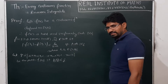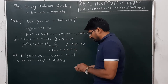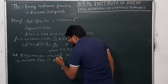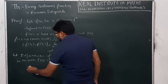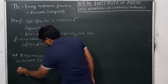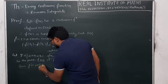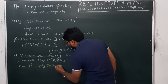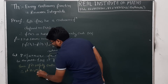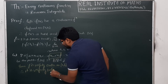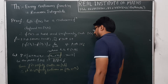Now, since f(x) is uniformly continuous on [a, b], it is also uniformly continuous on each sub-interval [x_{i-1}, x_i]. We define small m_i as the greatest lower bound (infimum) of f(x) on the interval [x_{i-1}, x_i]. Since the greatest lower bound is attained at some point, say f(c_i), where c_i belongs to [x_{i-1}, x_i].